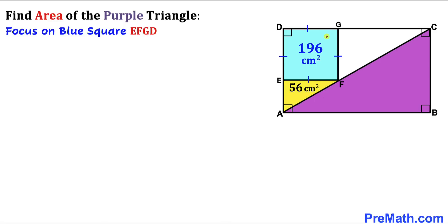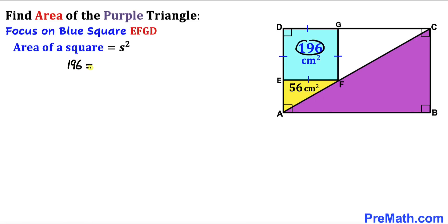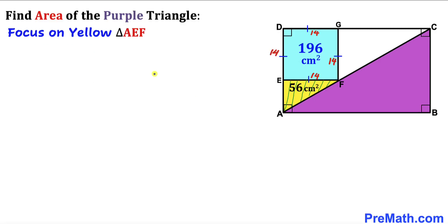Let's focus on the blue square and recall the area of a square formula: area = s², where s is the side length. In our case the area is 196, so 196 = s². Taking the square root on both sides, our side length s turns out to be 14 cm across the board.